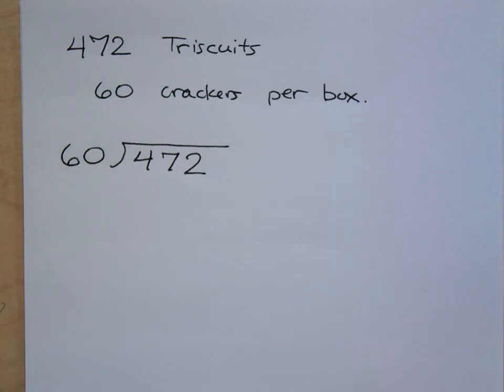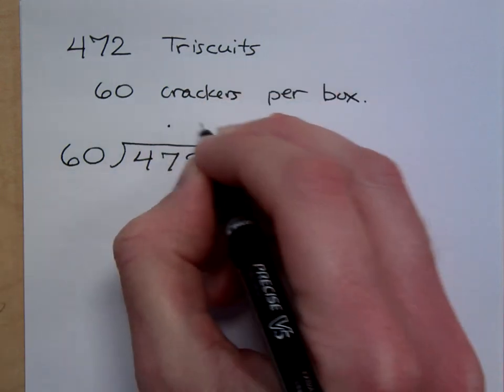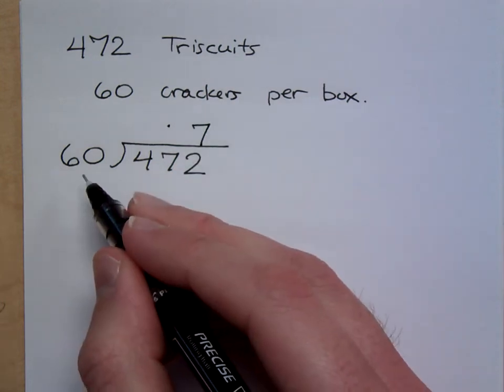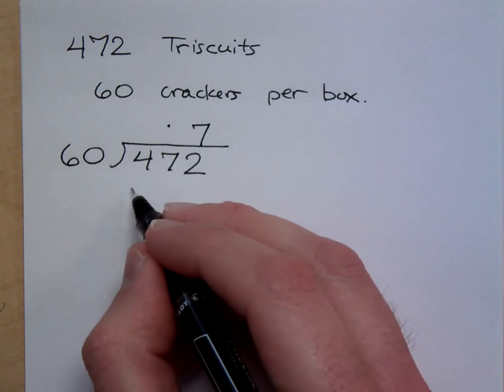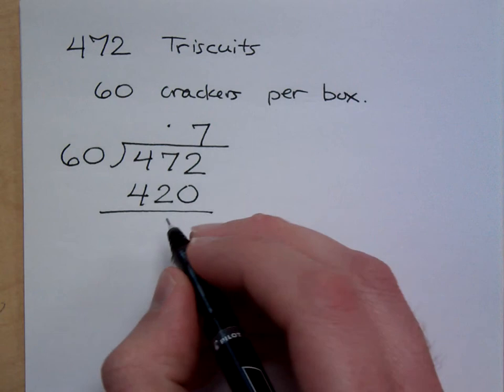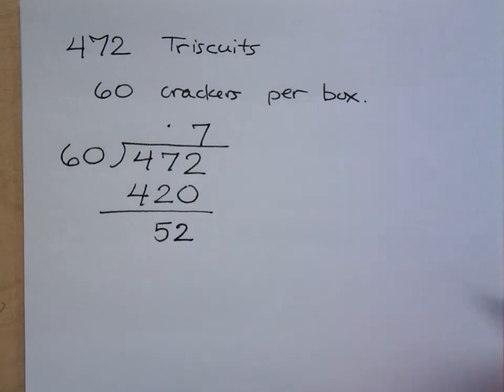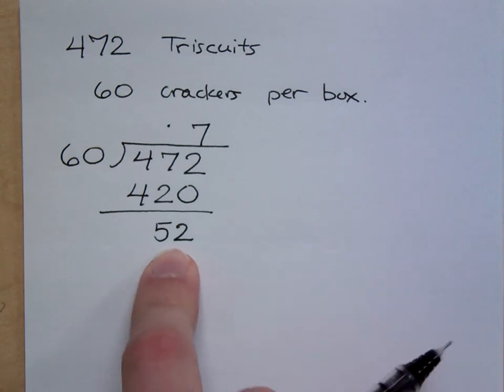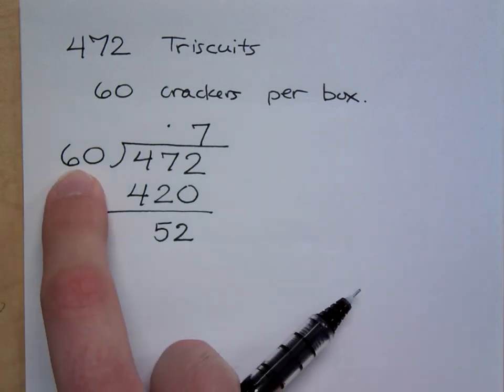6 times? Well, 6 times would give you 360, so 7 times, right? So if it goes in 7 times, what's 7 times 6? It's 42, so 7 times 60 is 420. And that would give me, what is the remainder? It gives me 52 for a remainder. Remember when you're doing division, your remainder can never equal or exceed your divisor. Because if it does, then you didn't go high enough.